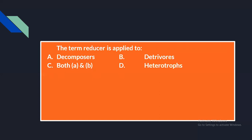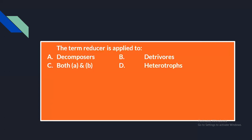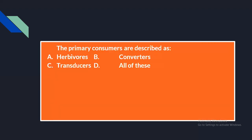Decomposers break down dead bodies or organic components. Detritivores are heterotrophic animals that feed on dead particulate and organic material — simply dead plant matter. Examples include crabs, snails, earthworms, dung beetles, and pill bugs. So the term 'reducer' applies to both decomposers and detritivores.